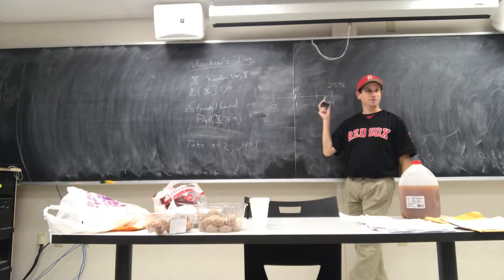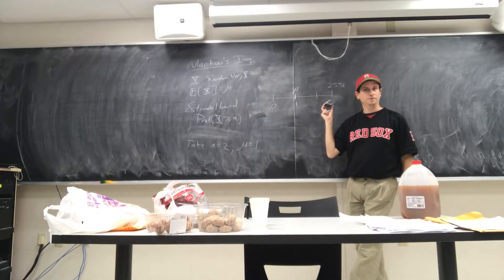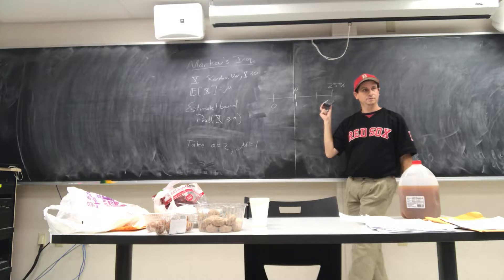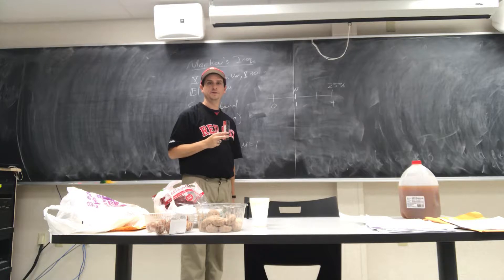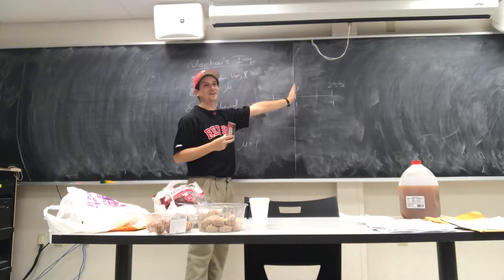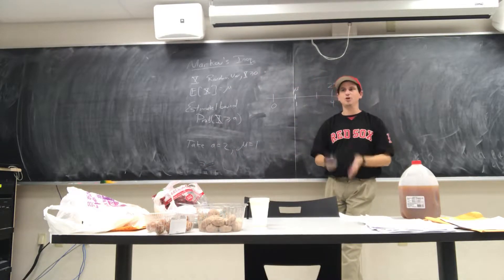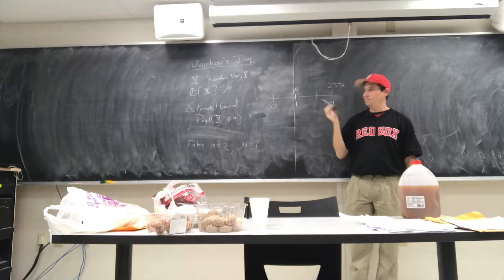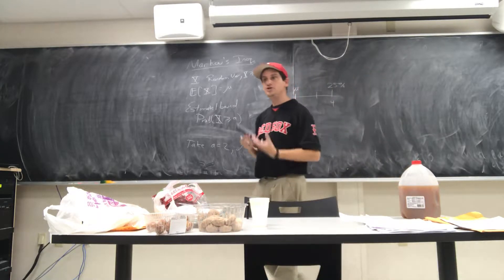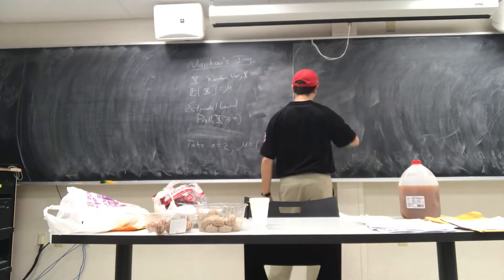Now we are getting non-trivial upper bounds. Is it possible that the probability at four could be zero? Yes — for example, if all probability is at the mean. So a bound of 25% might actually be too large; we don't know what the truth is. We just know that 25% is an upper bound — it might be zero. And so this suggests Markov's inequality.